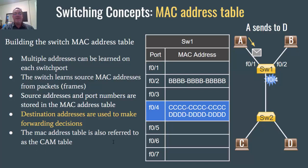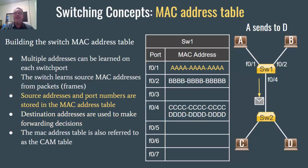The MAC address table is also referred to as the CAM table. Now the frame gets forwarded, and Switch1 has added the MAC address for host A into the MAC address table associated with port 1. Source addresses and port numbers are stored in the MAC address table.